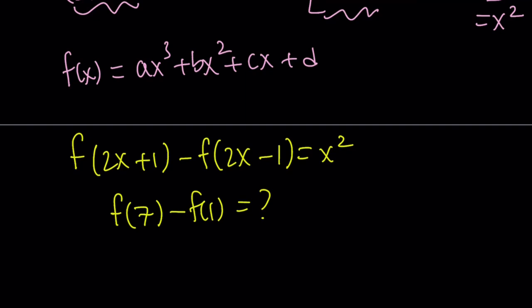And guess what? 2x plus 1 and 2x minus 1 are also odd numbers if x is an integer. Nobody said x is an integer, but why not? So in order to be able to get f of 7 minus f of 1, I could just start off with something like this. I'm going to get f of 7, so why not replace x with 3? Because that's going to give me f of 7.